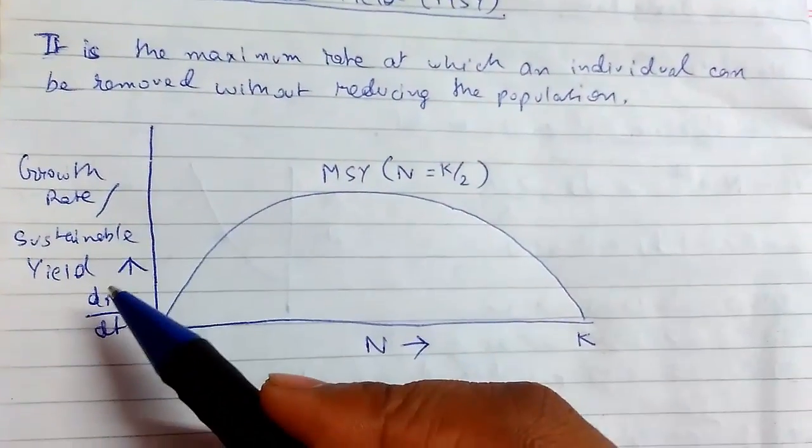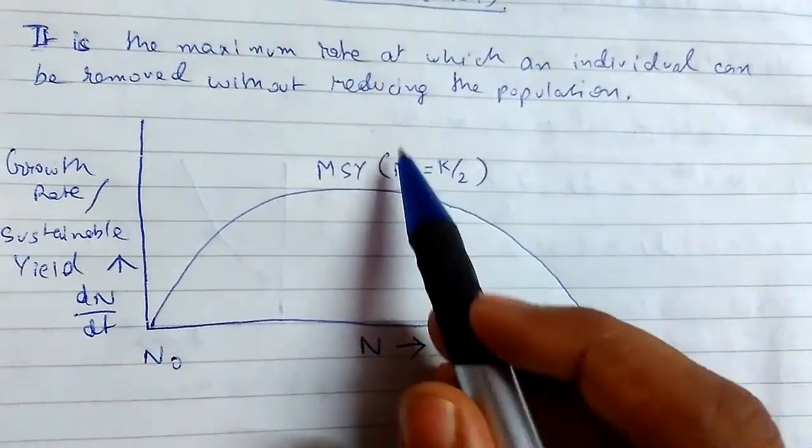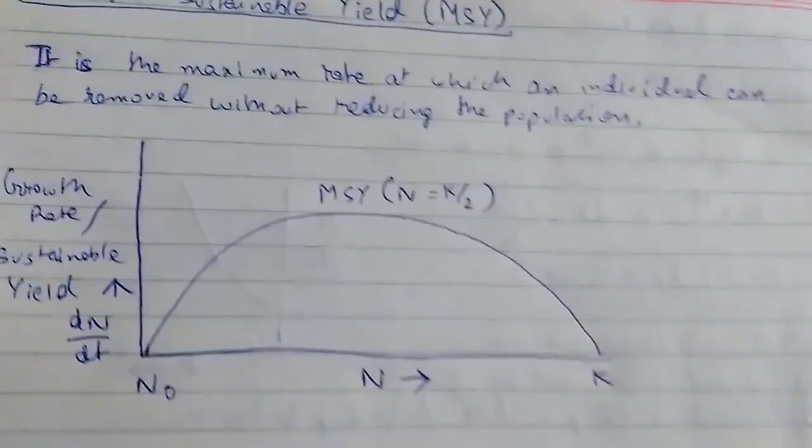So this is the graph. This is the growth rate of sustainable yield dN/dt. This is MSY. This is the condition at which MSY occurs. So we need to derive this.